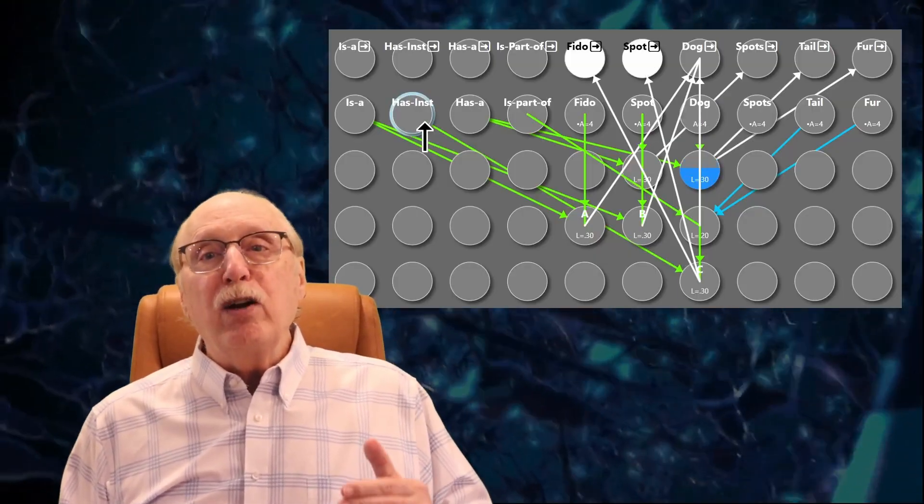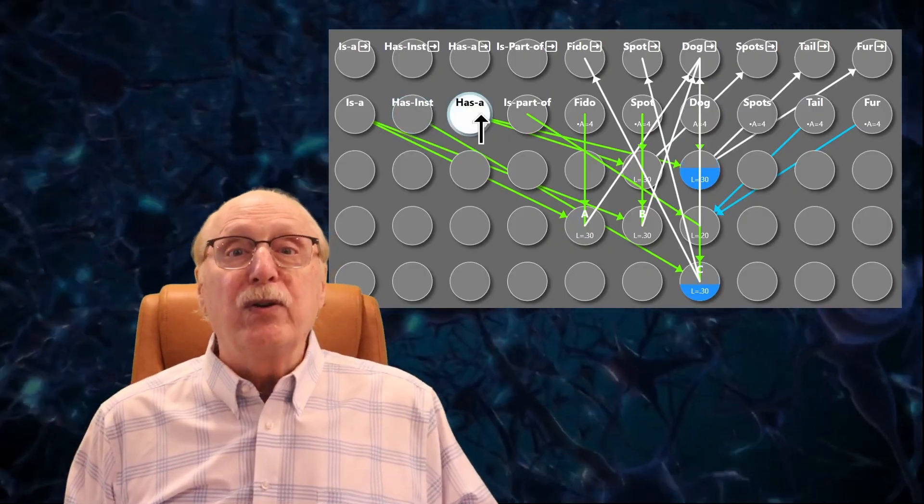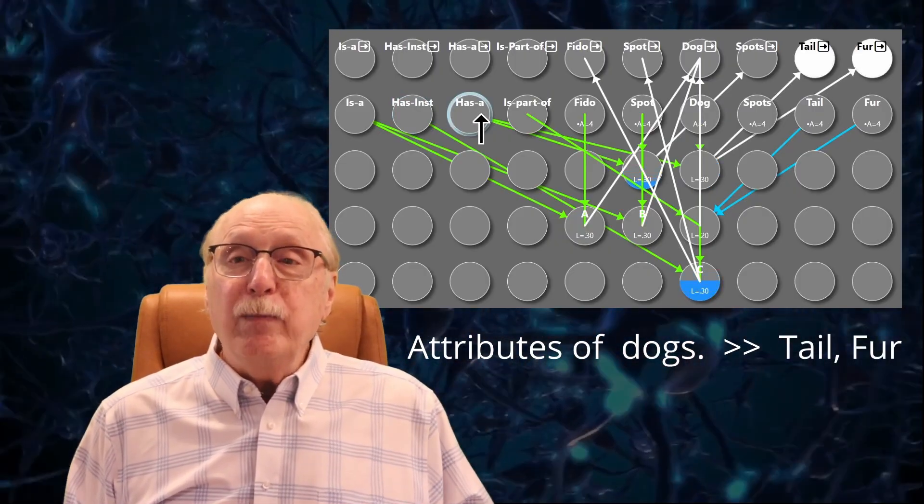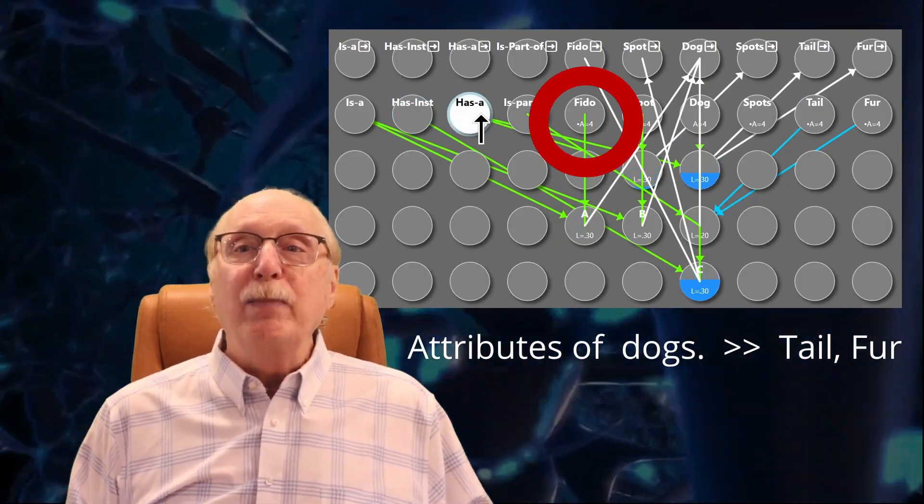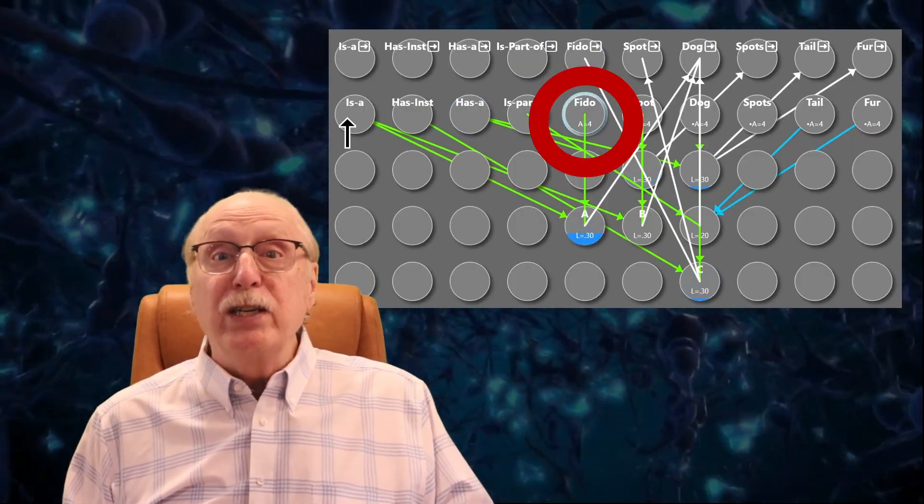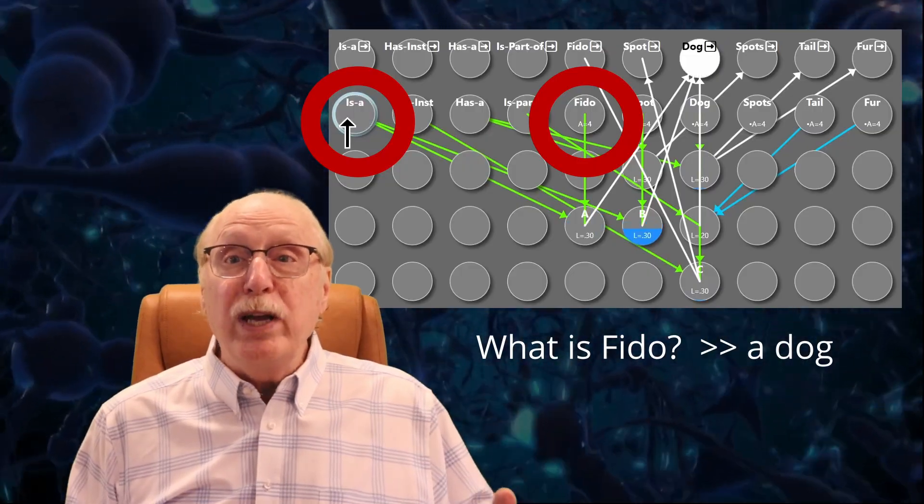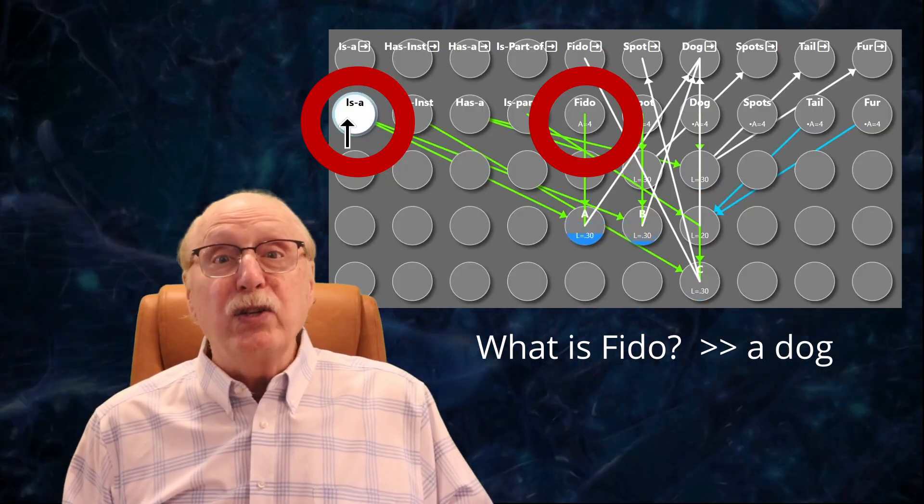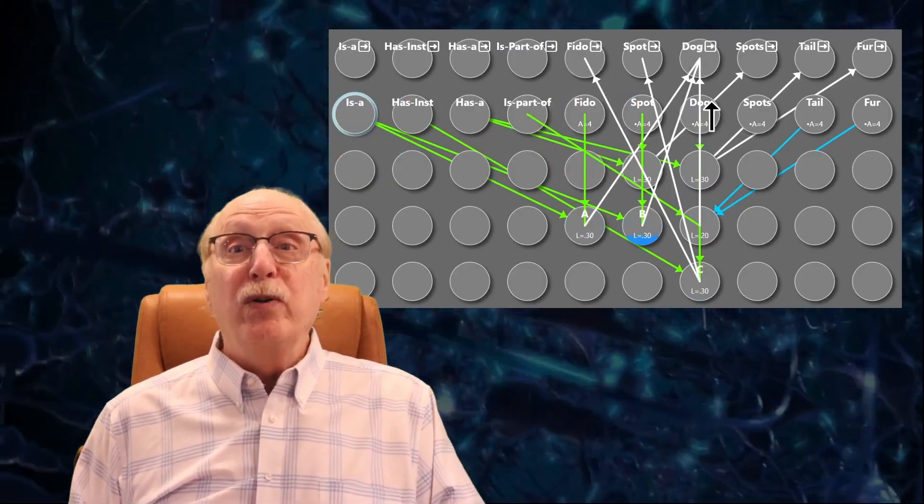These are the neurons which fire in the event that FIDO, or DOG, is the result of a query. In a layer below are the input neurons, where query inputs happen. As we described in the previous video, if your brain needs to know what FIDO is, it fires the FIDO input neuron, and the ISA neuron, and the DOG output neuron will fire.